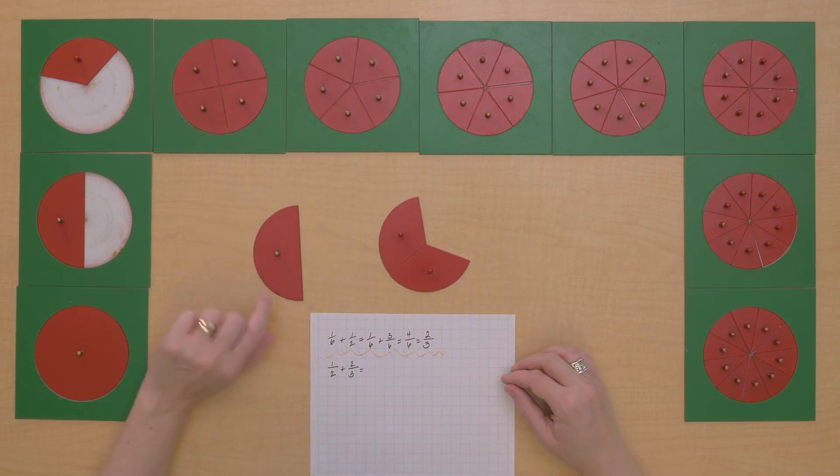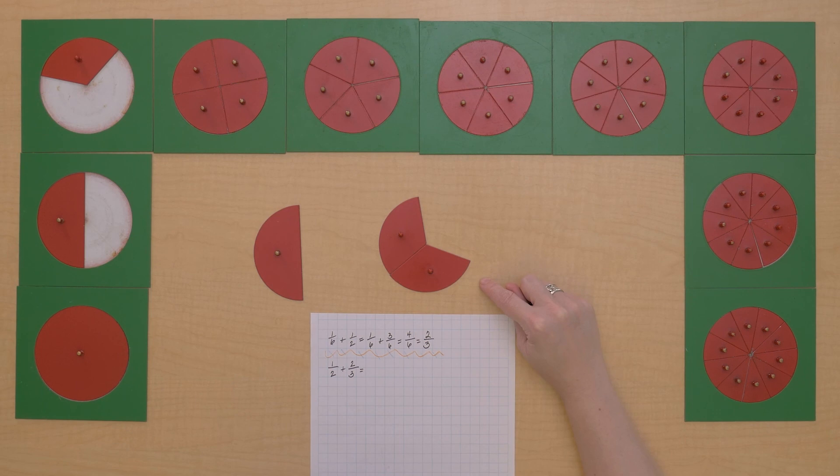Well, I can't really turn halves into thirds, and I can't turn these thirds into halves. So we need to find an equivalent fraction that they have in common. Let's see. What do they have in common? Sixths, right?